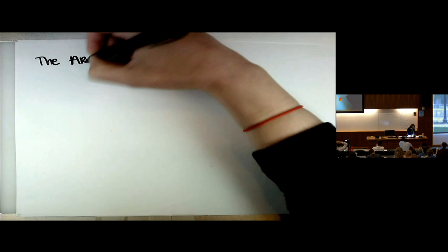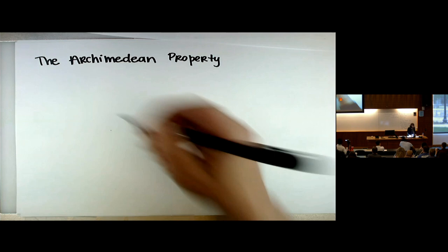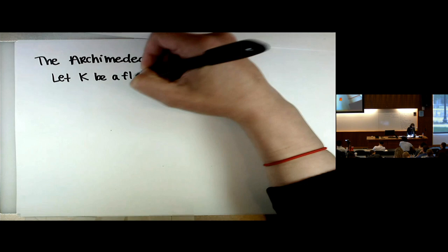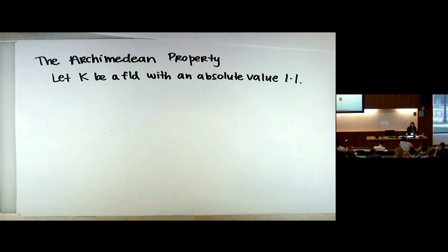I'm going to start with the Archimedean property so that you know what non-Archimedean means. One thing I disagree with the book on: Gouvea spells Archimedean with an 'i' — we're not doing that here. You're welcome to do what you want in the comfort of your home, but don't show me that.